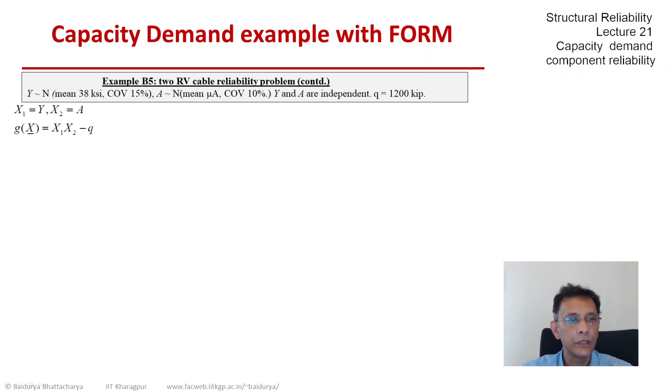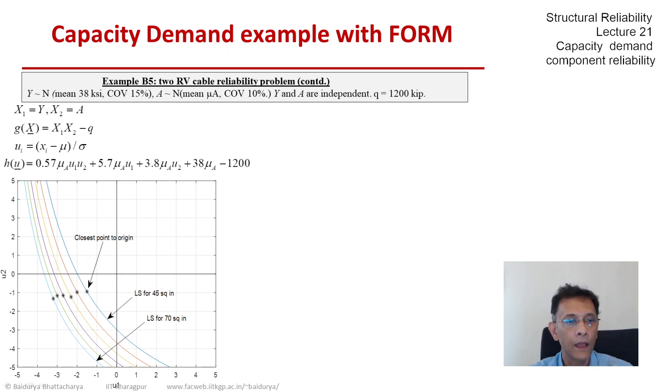Let's see what results we get. What we have here is after putting in all the values of the mean and standard deviation of y and a, and mu a is the unknown here, we get a family of curves. All those lines that you see - previously we just have one corresponding to the mean of a as 50. Now we have a family of mean of a starting from 45 square inch all the way to 70 square inch, and all the stars that you see on these limit state lines are marked as closest point to the origin. So each of those curves has one optimal point - the point of maximum likelihood, the checking point. The distance would be the corresponding beta value.